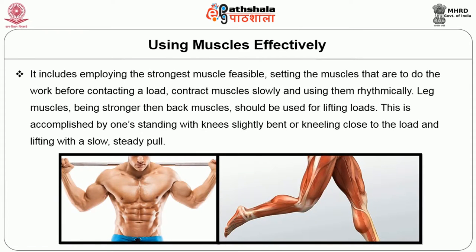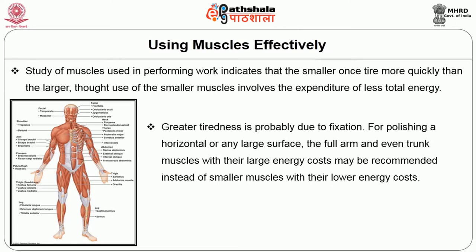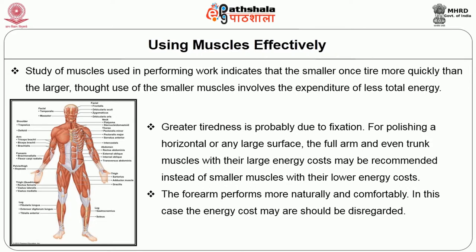Using muscles effectively includes employing the strongest muscle feasible, setting muscles to do the work before contracting a load, contracting muscles slowly and rhythmically. Leg muscles, being stronger than back muscles, should be used for lifting loads — accomplished by standing with knees slightly bent or kneeling close to the load and lifting with a slow steady pull. Studies indicate that smaller muscles tire more quickly than larger ones. For polishing a large horizontal surface, using full arm and trunk muscles — though with higher energy cost — may be recommended over smaller muscles.